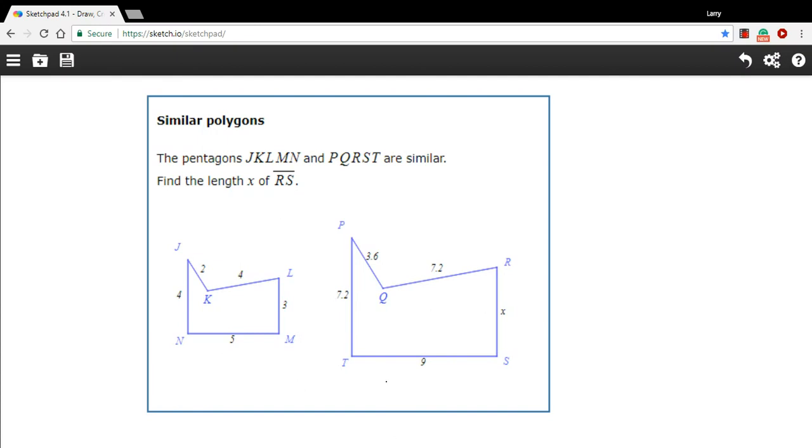In this problem, we have two polygons that are similar. What does that mean to have a polygon that's similar? Well, you can see that this one on the left is smaller than this one on the right. But what similar means is that each side of this polygon is the same amount smaller on the left than on the right.